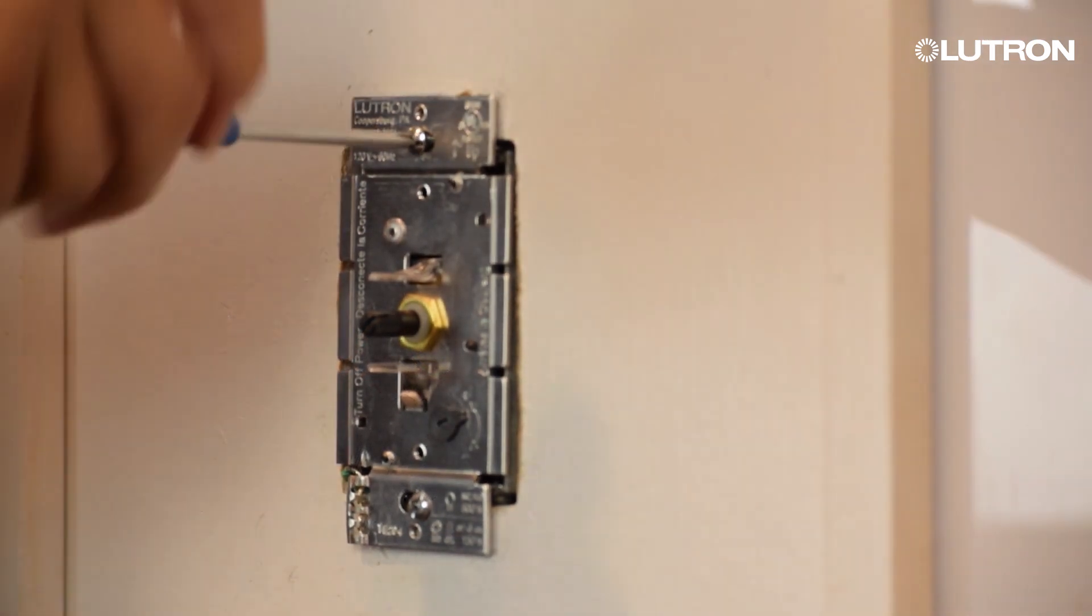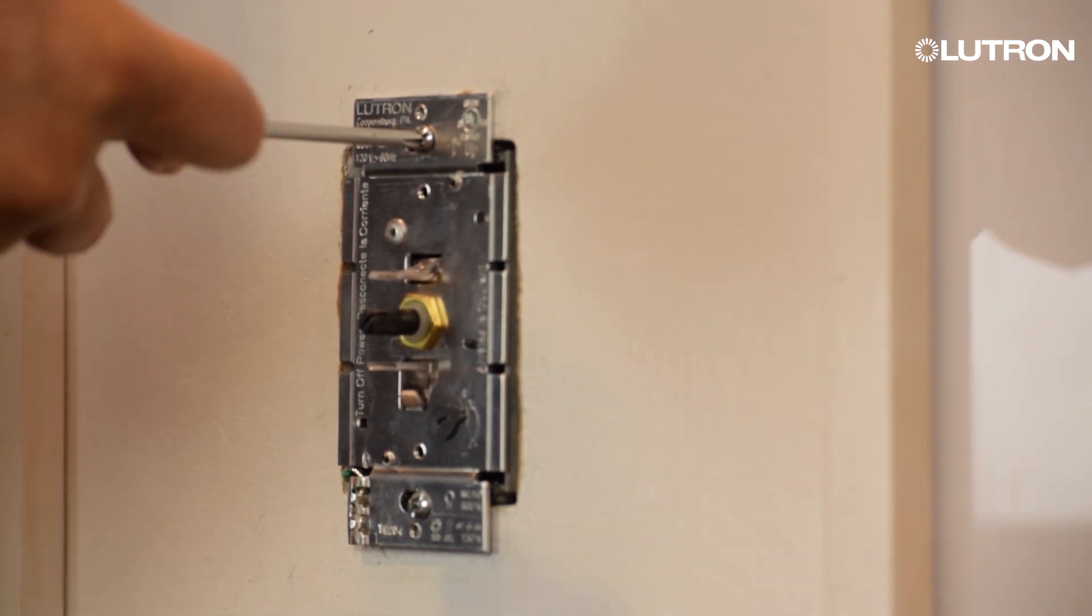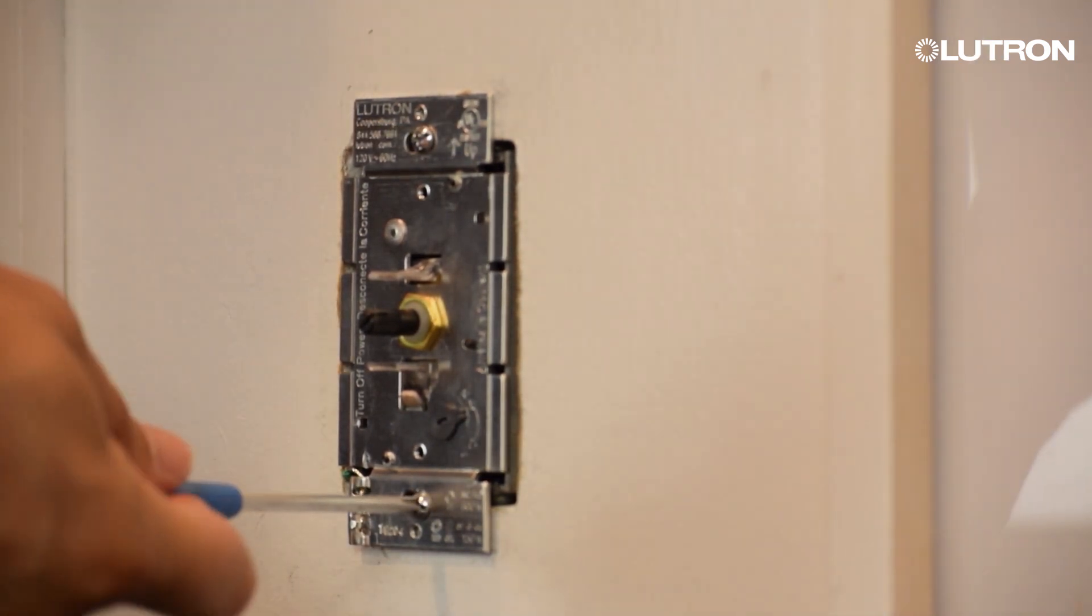Now that the wires have been connected, you can fasten the dimmer to the wall box. Insert the wires and dimmer into the wall and attach the dimmer with the provided screws.